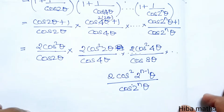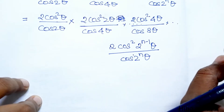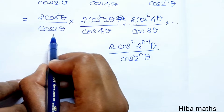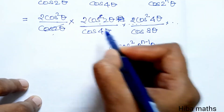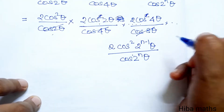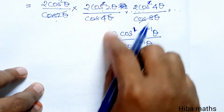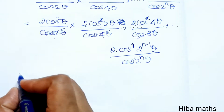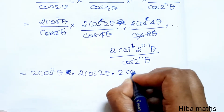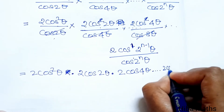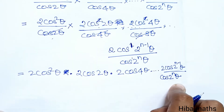Now in the next step we use this identity to simplify. We can see that cos2θ appears in numerator and denominator and these terms cancel. We continue cancelling all intermediate terms, leaving: 2cos2θ · 2cos4θ · ... · 2cos(2ⁿ⁻¹θ) divided by cos(2ⁿθ).